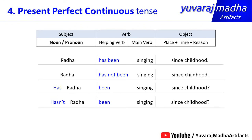So, using 'have been' and 'has been' you will be able to form present perfect continuous sentences. Remember: use 'have been' or 'has been' followed by the verb in the -ing form.